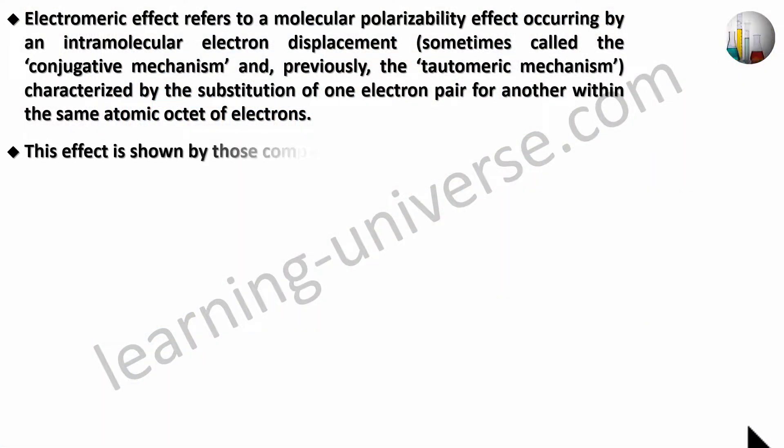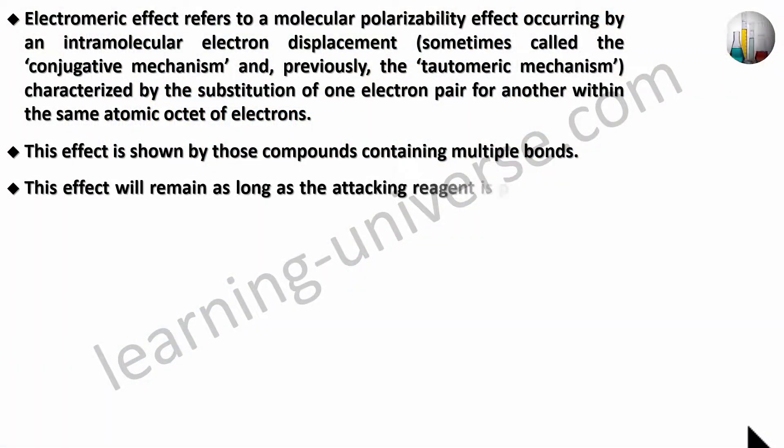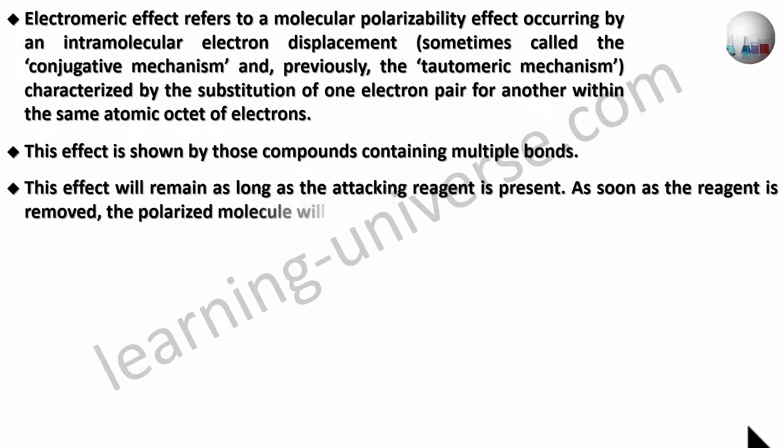This effect is shown by compounds which contain multiple bonds. Molecules with multiple bonds are capable of showing Electromeric effect. If a molecule does not have any pi electrons, you will not observe Electromeric effect. Multiple bond is required. This effect will remain as long as the attacking reagent is present. As soon as the reagent is removed, the polarized molecule comes back to its original state — it is a temporary and sudden effect due to the presence of other molecules or groups present in the same molecule.